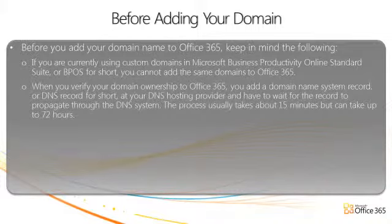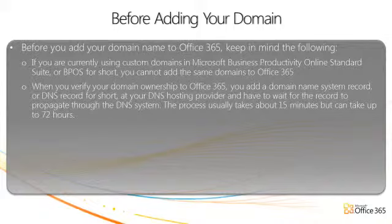When you verify your domain ownership to Office 365, you add a domain name system record, or DNS record for short, at your DNS hosting provider and have to wait for the record to propagate through the DNS system. The process usually takes about 15 minutes, but can take up to 72 hours.